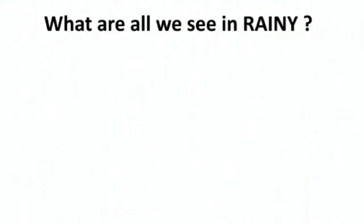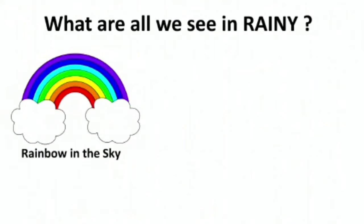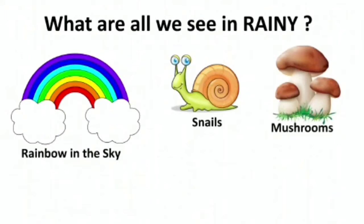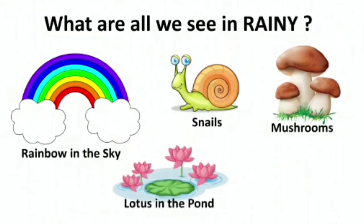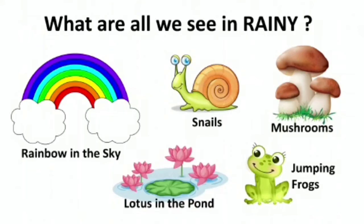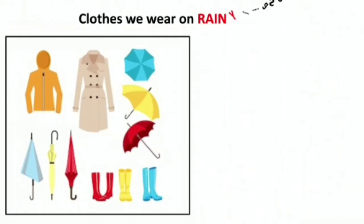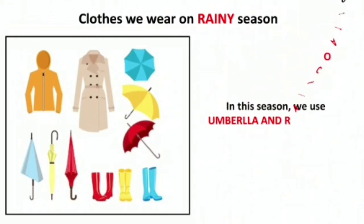So what do we see in the rainy season? We can see a rainbow in the sky. You can see lots of snails near the trees and plants. You can see mushrooms at the bottom of the trees. You can see plenty of lotus flowers in ponds. You can see jumping frogs near the water bodies. In this season we use umbrellas and raincoats to protect ourselves from rain.